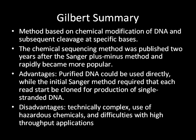A summary of the Gilbert method: this method is based on chemical modification of DNA and its subsequent cleavage at specific bases. The chemical sequencing method was published two years after the Sanger plus-minus method and rapidly became more popular. Advantages include that it uses purified DNA directly, while the initial Sanger method required that each read start be cloned for production of single-stranded DNA. Disadvantages are that it is technically complex, uses hazardous chemicals, and is difficult to use with high-throughput applications.